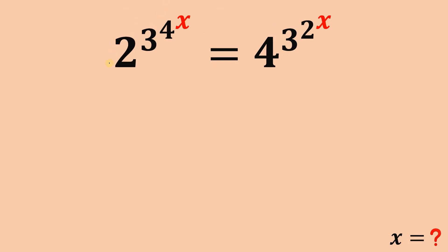So given this equation, we have power of powers: 2 raised to the power of 3, raised to the power of 4, raised to the power of x, equals 4 raised to the power of 3, raised to the power of 2, raised to the power of x. Our goal is to solve for the value of x. Note that the answer is not so nice because it contains logarithm and square root.